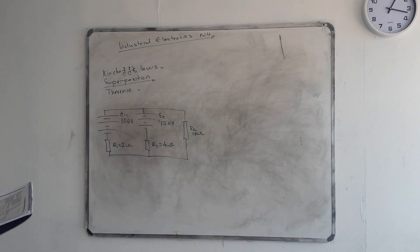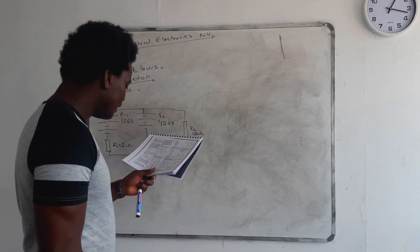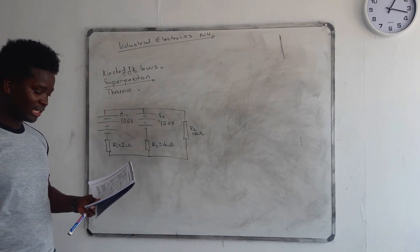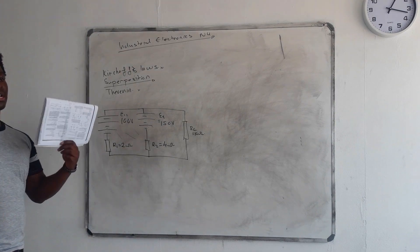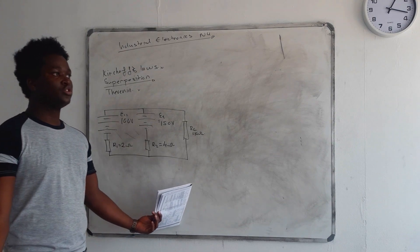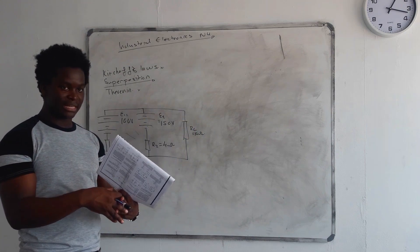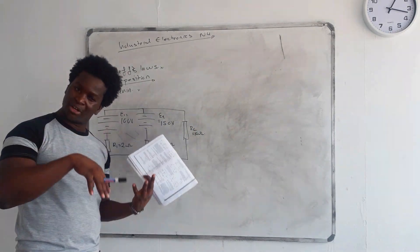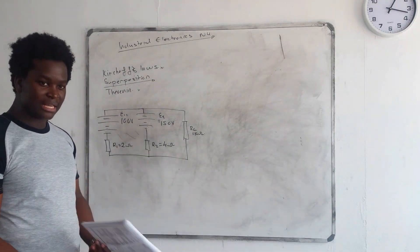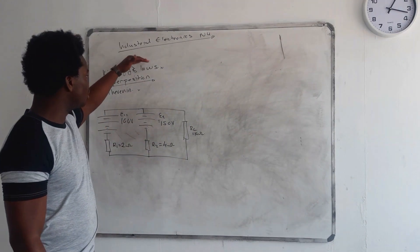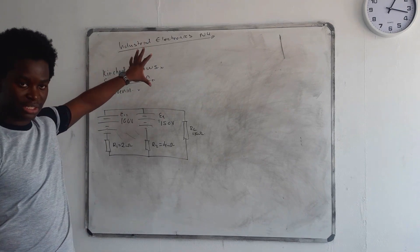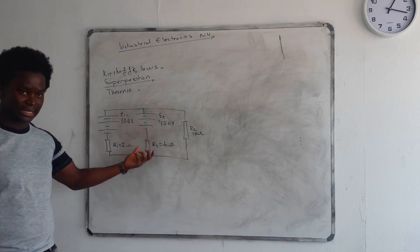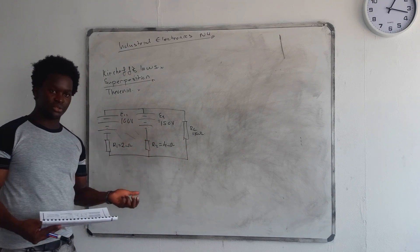Now the question says: calculate the current passing through the load resistor. All these laws are here to make our work easier with the circuits, because our circuits are going to have more wires and get more complicated. These methods are there to help us simplify our circuits, and then from there they are easy to calculate.